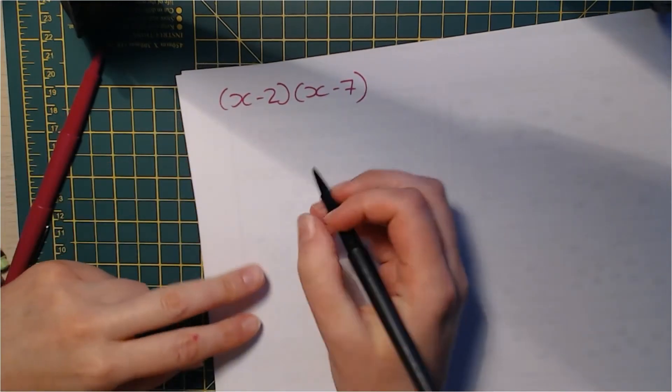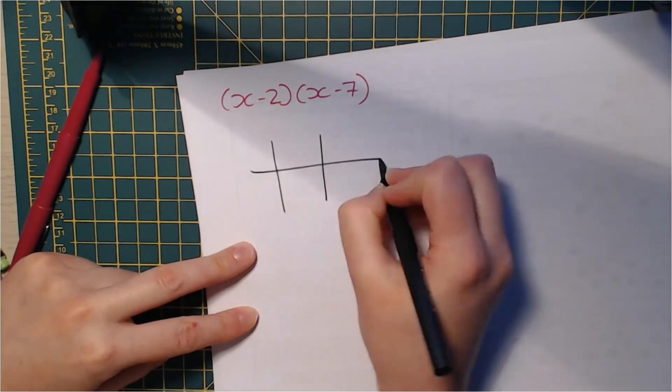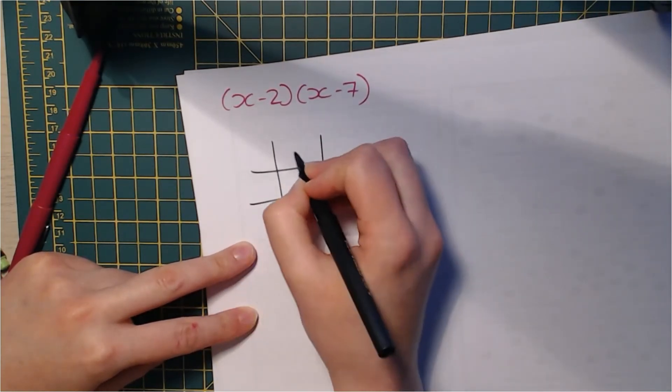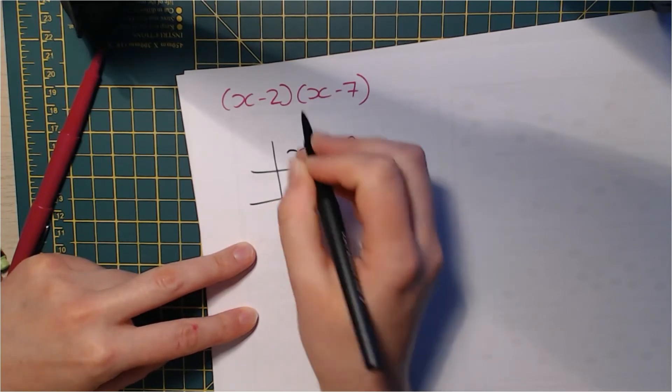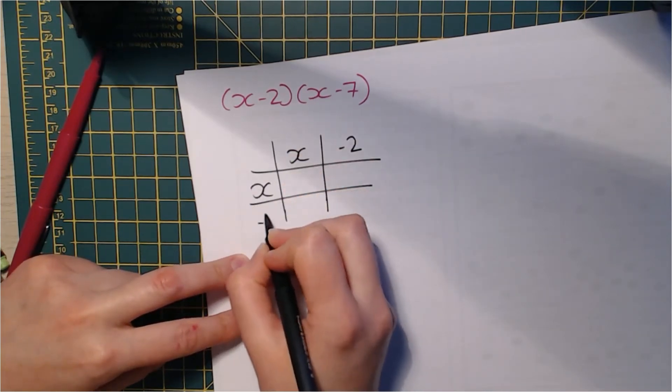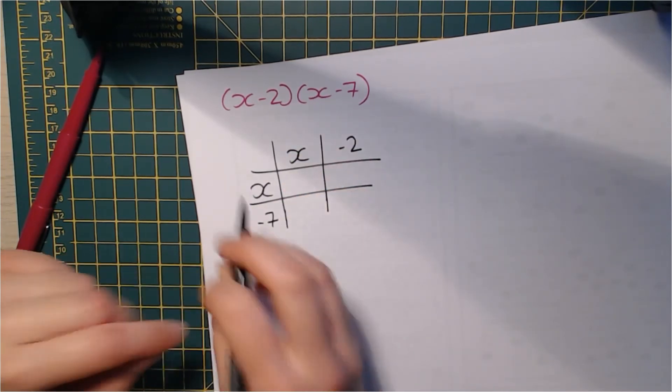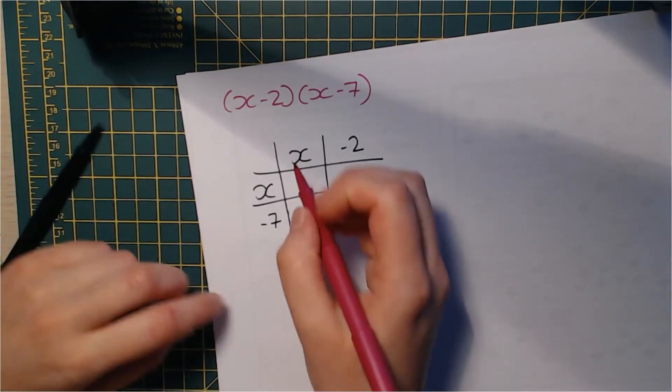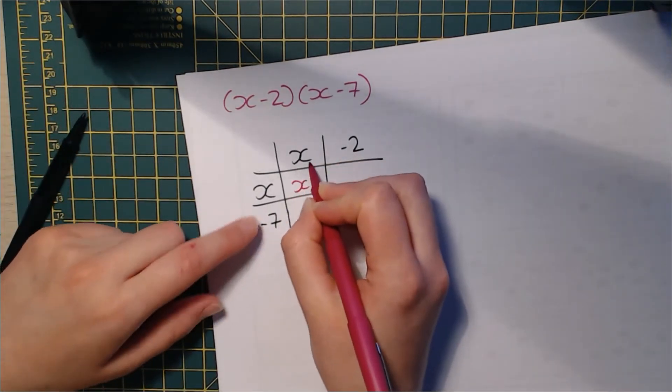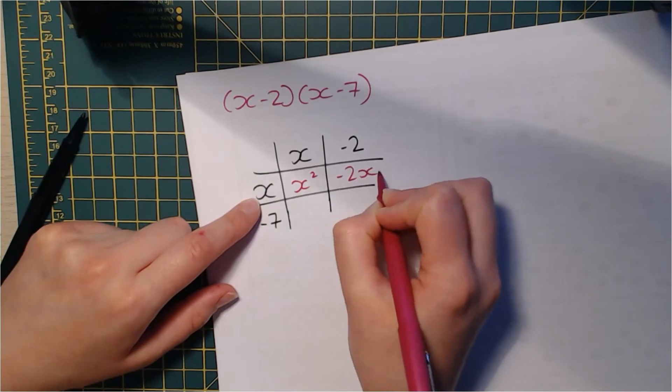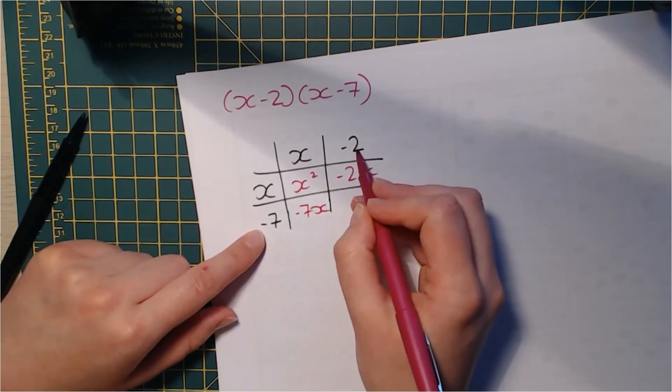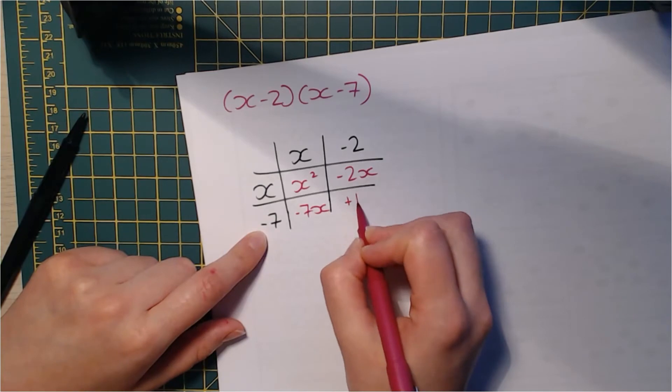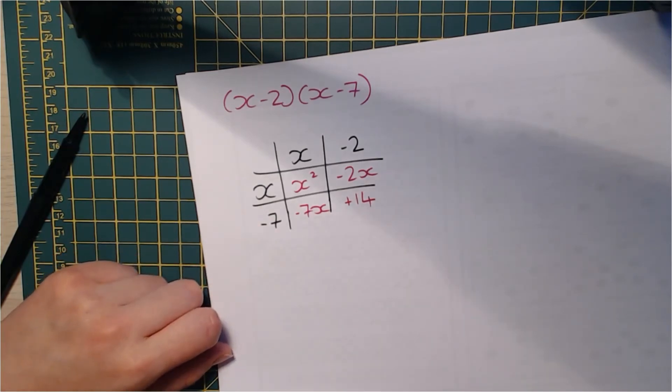Okay, next one. Two negatives this time. So x negative 2, x negative 7. There we go. So I have x squared in there, negative 2x, negative 7x, and be careful with this one because this time we're going to get a positive 14.